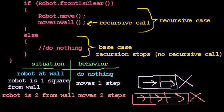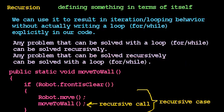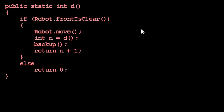Let's explore another method. Here's a method called D. If the front is clear, the robot moves, then calls D again — so it's recursive — and stores the result in a variable called N. Then it backs up, meaning the robot takes one step backwards, and returns N plus one. If the front is not clear, it returns zero. I want to know what this program does.